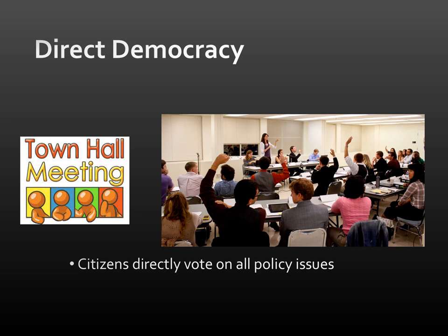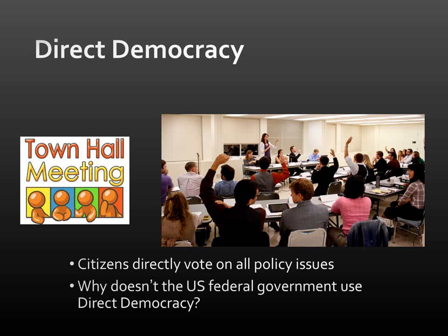Citizens directly vote on all policy issues. Why doesn't the U.S. federal government use direct democracy? Well, the country is probably too large, both geographically and in population, for this to work. People aren't informed enough to know every single thing going on to vote on every single policy. It would take too much time and be inefficient. So for these and plenty more reasons, the U.S. federal government is not a direct democracy.